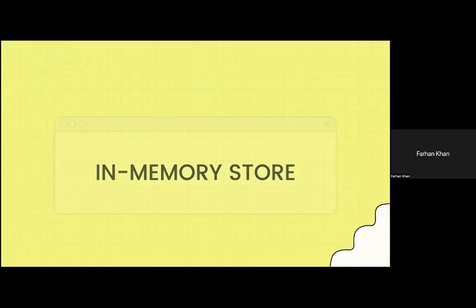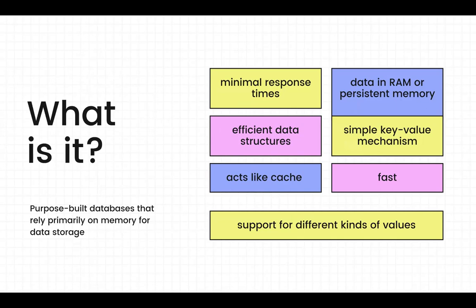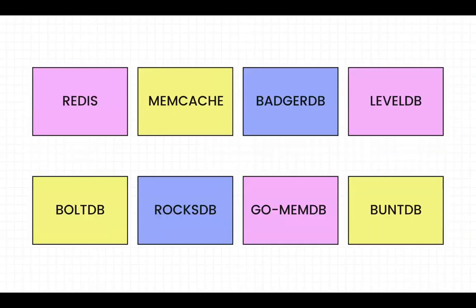A small primer on in-memory storage: in-memory key-value stores are purpose-built databases that rely primarily on memory for data storage. They act like a cache on your machine — they're fast, they fit most things into RAM, and they have efficient data structures focused on storing data in RAM. They have a simple key-value mechanism with no complex relational structures, and data structures focus on faster lookups and minimal response times.